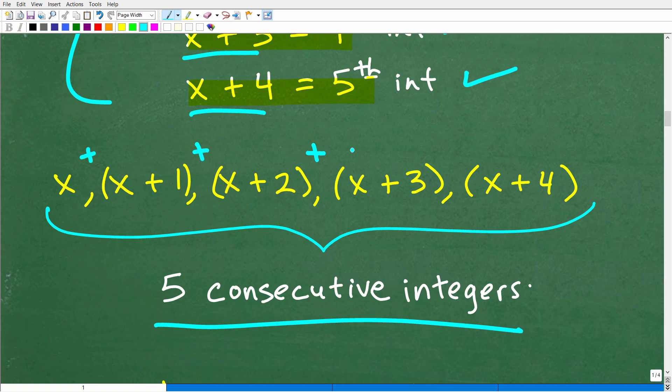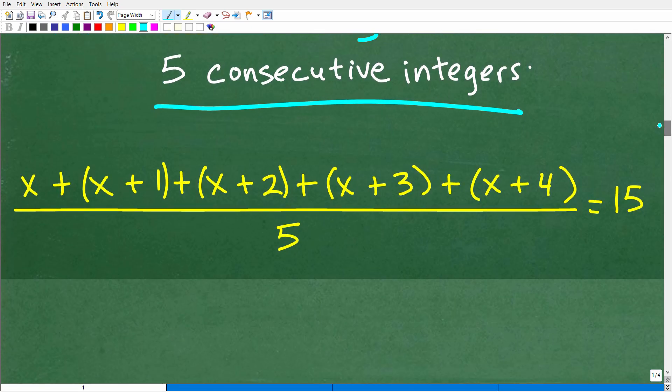So here is our five consecutive integers. So if we wanted to find the average, we would do what? We would add these up, and then we would divide by what? One, two, three, four, five, right? And we know the answer is 15. So we're going to build ourselves a lovely equation that looks like this. Okay, so x plus x plus one plus x plus two plus x plus three plus x plus four. There is five. We're going to divide by five. We know that the mean or the average is 15. So now it really comes down to your ability to solve this lovely equation.